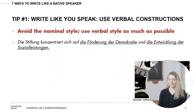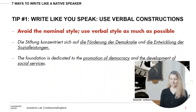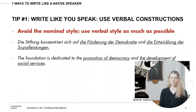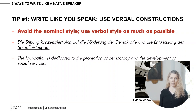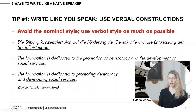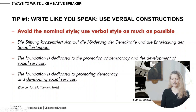Here's an example of a German sentence — you can see lots of big nouns. If we were to translate it straight into English, we'd also get a lot of big nouns: 'The foundation is dedicated to the promotion of democracy and the development of social services.' When you're writing, you're still translating structures from your native language into English. We can change these big nouns into verbs: 'promotion of' becomes 'promoting' and 'development of' becomes 'developing.' The result: 'The foundation is dedicated to promoting democracy and developing social services.' This brings down the word count and makes it more idiomatic and natural.